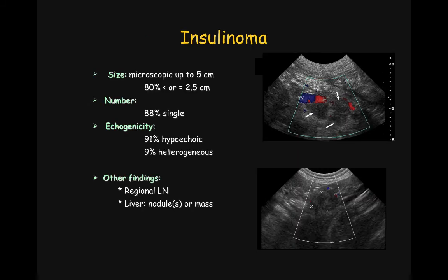Insulinomas vary greatly in size. Most tend to be very small tumors — from microscopic — but they can reach up to 5 cm in diameter. The likelihood of detecting them is highly dependent on their size. The number can vary from single to several nodules. As we see on these top images, there are several hypoechoic nodules within the pancreatic parenchyma. The echogenicity is most commonly hypoechoic to the surrounding parenchyma; however, heterogeneous nodules have also been reported. It is very important to evaluate the regional lymph nodes and also the liver as they are the preferred sites for metastasis.